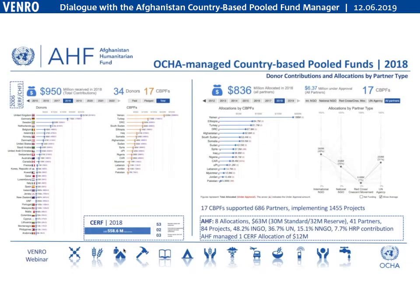Country-based pool funds started back in 2006 with the ERF model — the Emergency Response Funds. That model was later changed into the Common Humanitarian Funds, the CHFs. Then around 2014–15, the model was revised into what is now called CBPFs — country-based pool funds. OCHA now manages two models: CBPFs and the Central Emergency Response Fund, CERF. CERF funding is only accessible by UN agencies, whereas CBPF funds are directly accessible by INGOs.